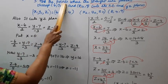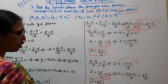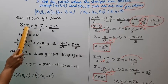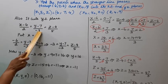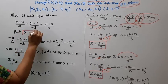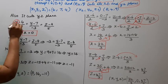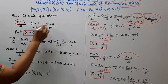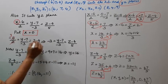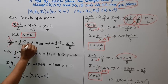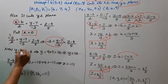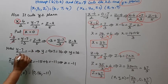The line cuts the XZ plane at the point (32/3, 0, 47/3). Now to find where it cuts the YZ plane — when x = 0. Setting x = 0: 0 minus 6 by 2 equals y minus 7 by minus 3, equal to z minus 4 by 5. So x minus 6 by 2 gives minus 3.